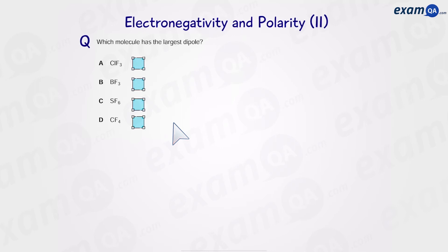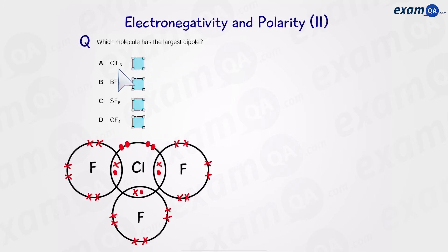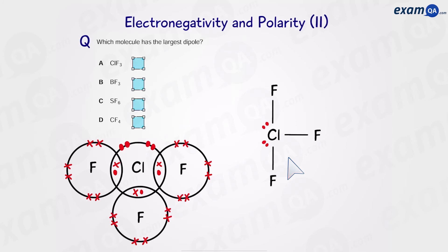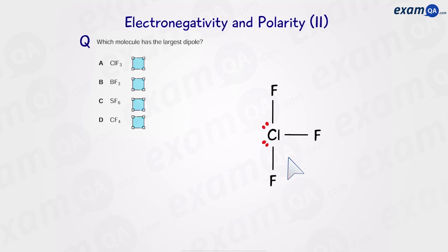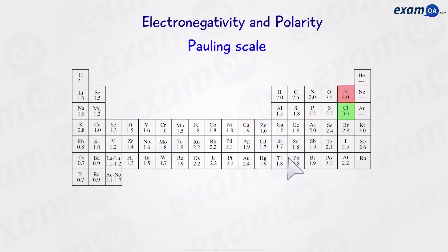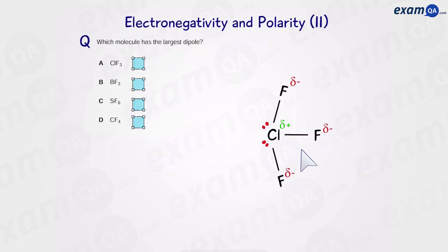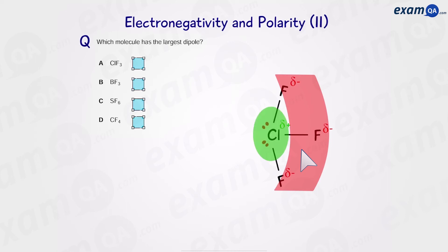Next question: which molecule has the largest dipole? Starting with A, we have chlorine bonded to three fluorine atoms, ClF3. Using our shapes table, this falls under the family of five bonds — three bonded pairs and two lone pairs — which gives a T-shape. The angle is actually 87.5 degrees rather than 90. Looking at the periodic table, the difference in electronegativity between chlorine and fluorine is one, so we get polar bonds. Looking at the molecule, we have a negative side and a positive side, so this is a polar molecule.